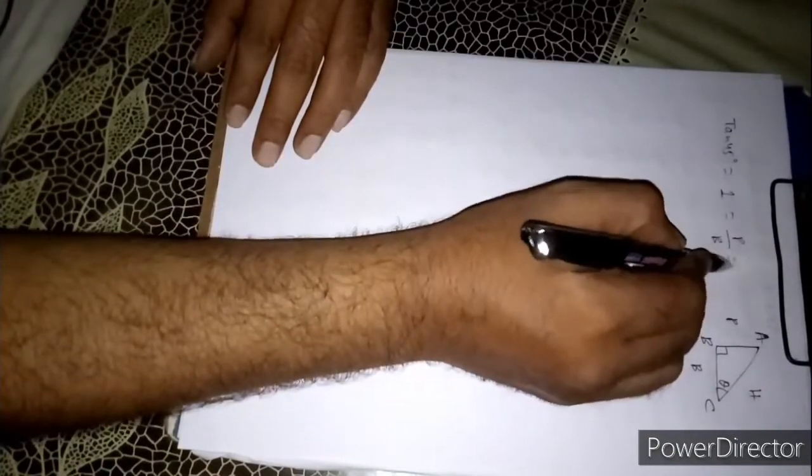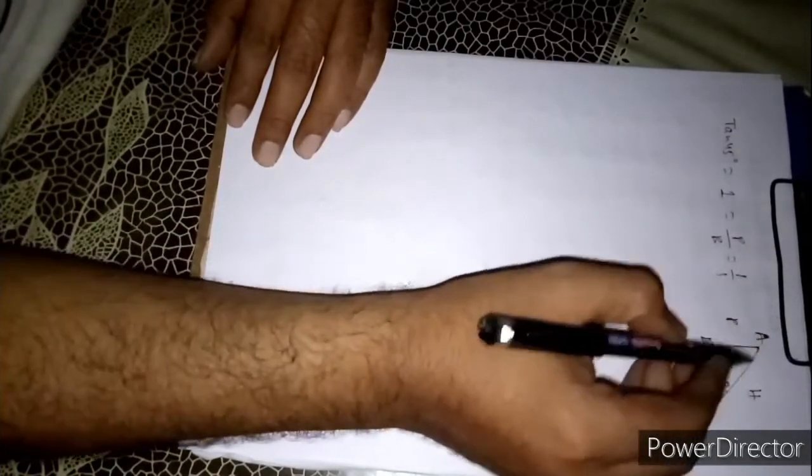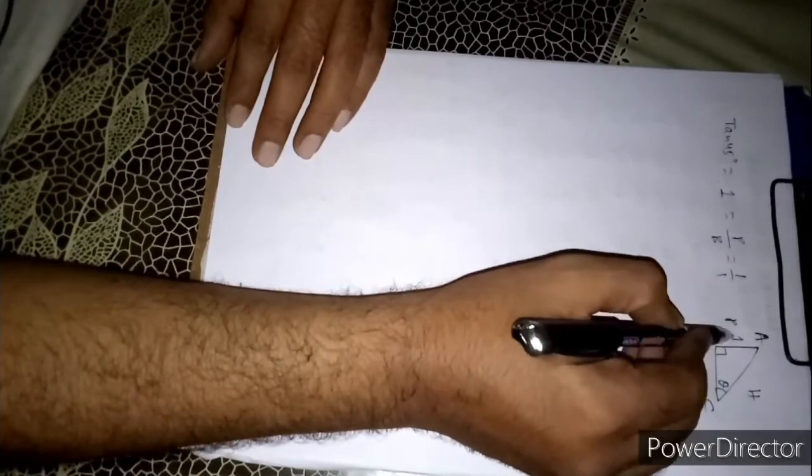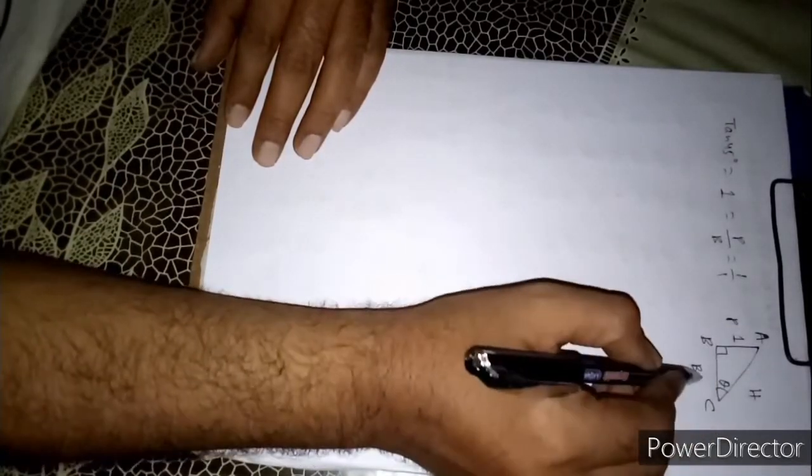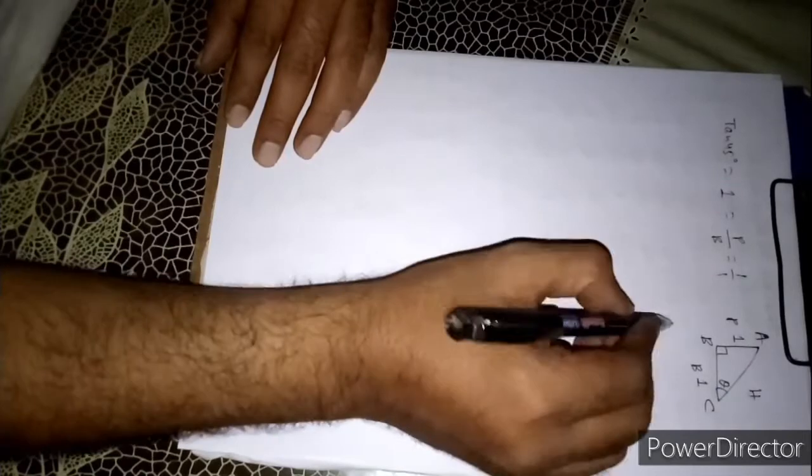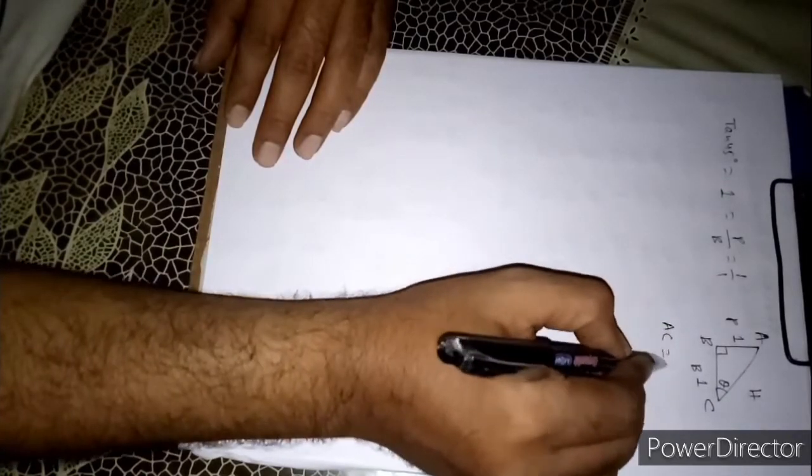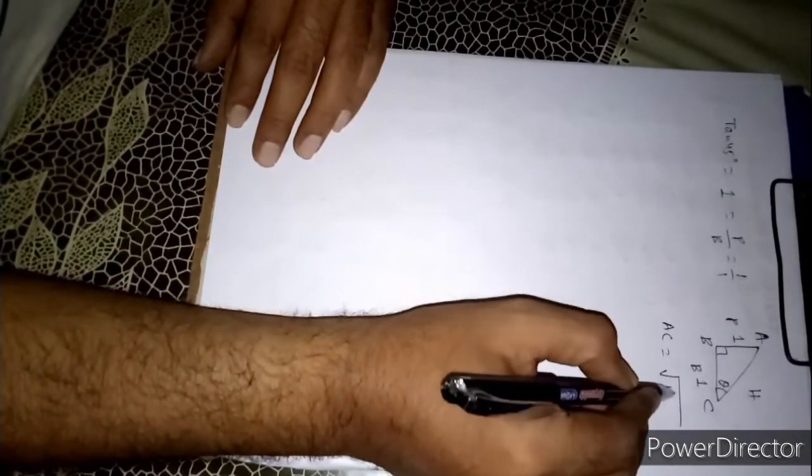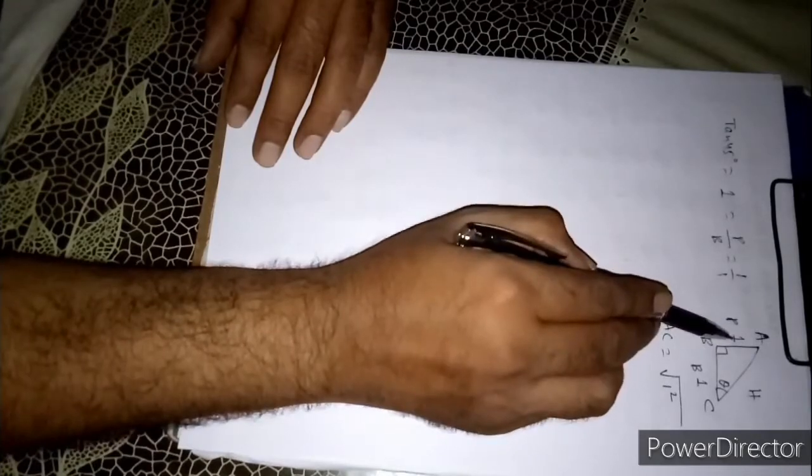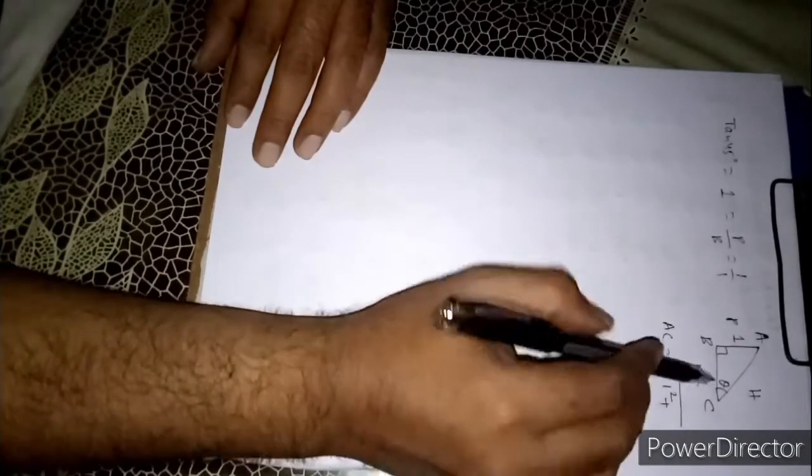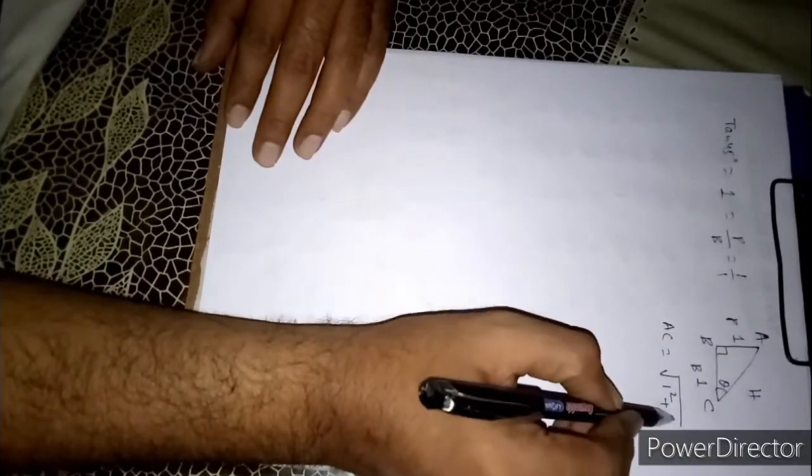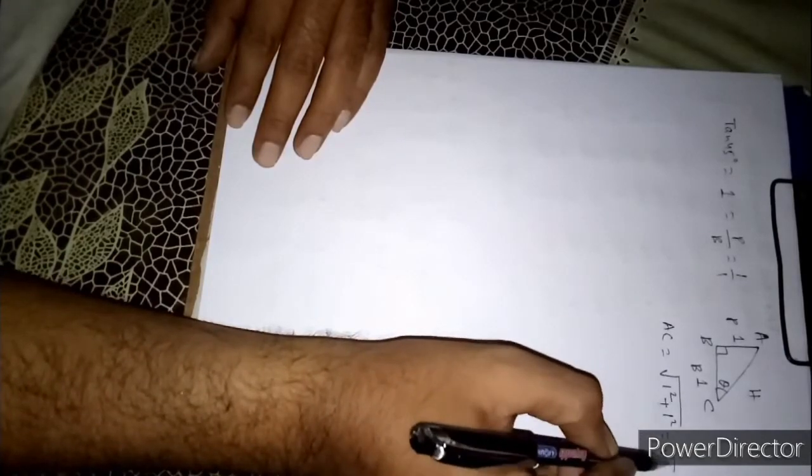So 1 means you can write 1 by 1. Here perpendicular I can write here 1 and base I can write here 1. Now by Pythagoras theorem AC equals root over 1 square, this one AB square, plus BC square. BC square means 1 square, you are getting root over 2.